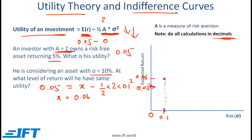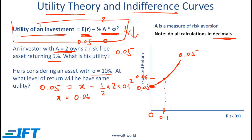The line which connects all these points where the investor is equally happy is called an indifference curve. This particular indifference curve tells us the different risk and return combinations at which the investor's utility is 0.05. The indifference curve is a graphical depiction of the utility function.